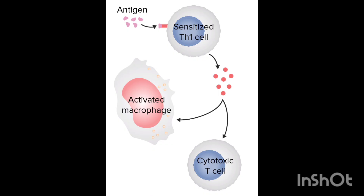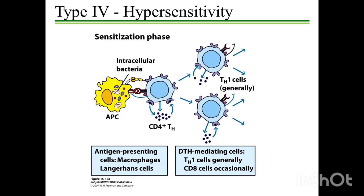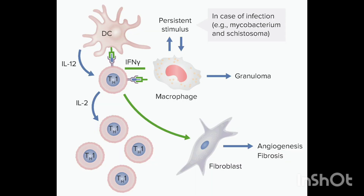The process of type 4 hypersensitivity initiates with sensitization of CD4 T lymphocytes, or helper T cells, by presentation of an antigen with the help of antigen-presenting cells. This leads to activation of T cells releasing interleukins, thus differentiating into TH1 cells, or T helper 1 cells.